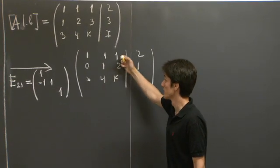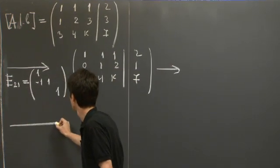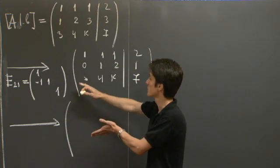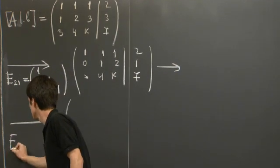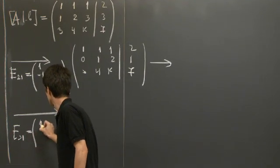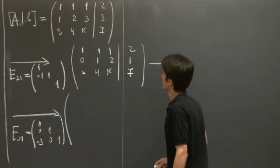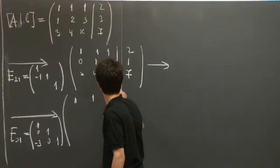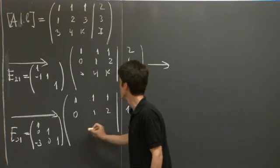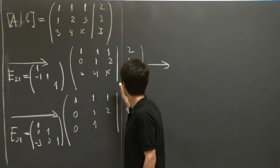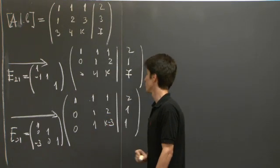Now, we subtract a multiple of the first row from the third one. It's precisely, we'll multiply the first row by negative 3 and add it to the third one. This is accomplished by the elementary matrix E31, which is 1, 1, 1, negative 3, and then 0, 0. OK, 1, 1, 1, 2; 0, 1, 2, 1. We copy the first two rows. And then the third one will be 0, 1, k minus 3, and 7 minus 3 times 2, 7 minus 6, 1.